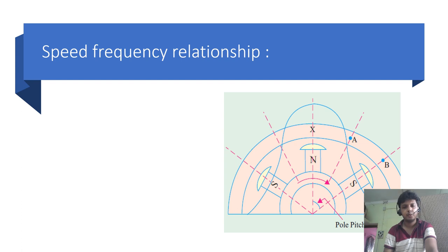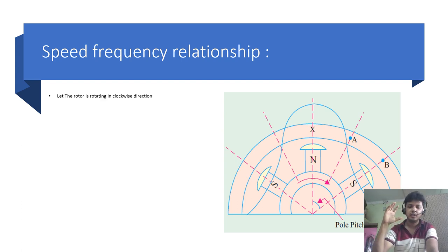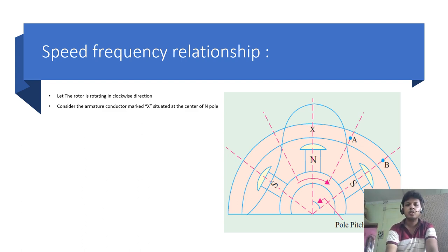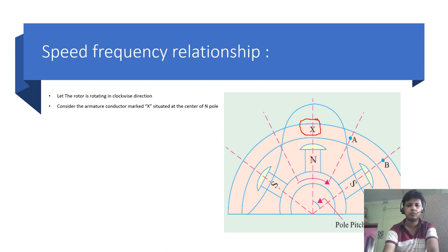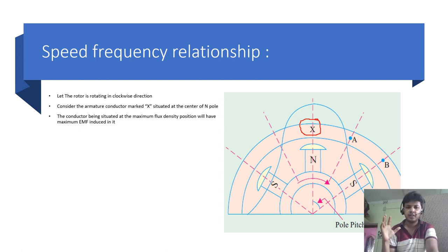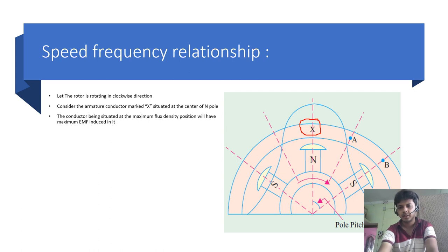For this, we have to take an example. Let the rotor be rotating in the clockwise direction. Consider the armature conductor marked X situated at the centre of the N-pole. The conductor, being situated at the maximum flux density position as it is under the N-pole, will have maximum EMF induced in it.